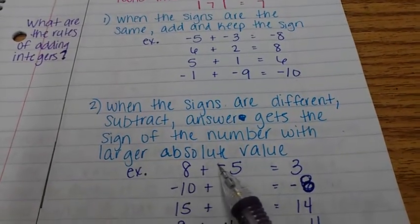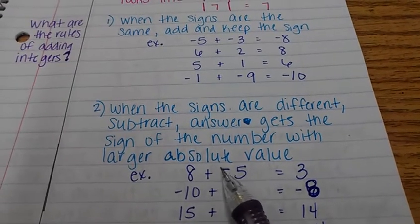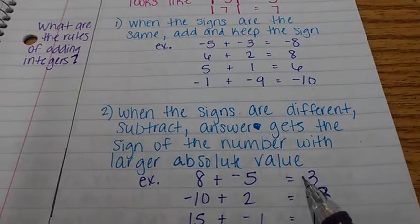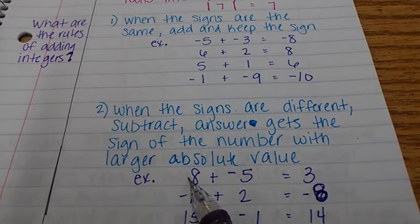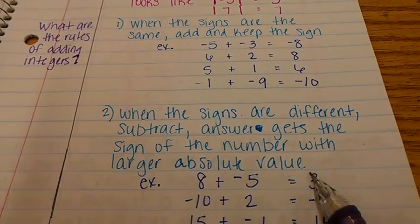You got a positive eight and a negative five. The signs are different. This is positive. This is negative. So we actually have to subtract eight minus five is three. Eight is a larger number than five. So since eight is positive, our answer is positive.